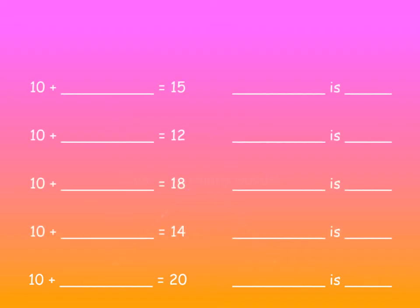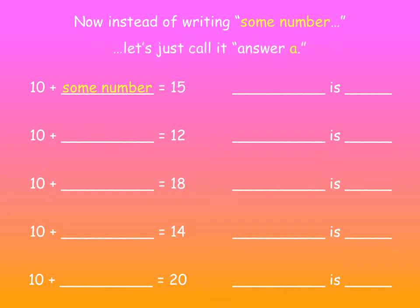Now instead of writing some number or some other number, let's just call it answer A. 10 plus answer A, and so answer A is 5. Some other number, well, let's get rid of that. We'll just put in a B. You know, A, B, C. We'll use the alphabet. 10 plus B, so B is 2. C is 8. D must be 4. And E must be 10.